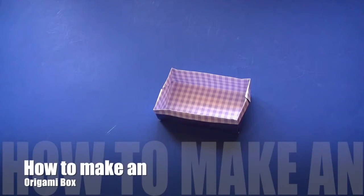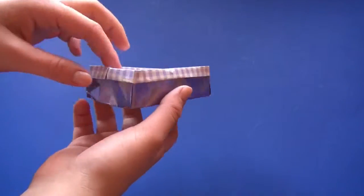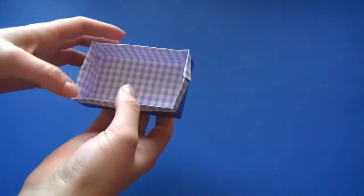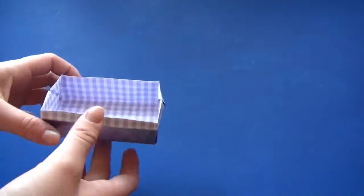Hi, today we're going to be making an origami box. It could be made out of any kind of paper - big, small, square, or rectangle - it doesn't really matter. It could be used for anything and it's really easy, so let's begin.